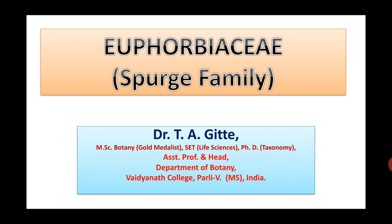Main plants of this family are Croton, Euphorbia, Hevea, Jatropha, Manihot, Ricinus, etc. The family comprises about 300 genera and 7500 species which are cosmopolitan in distribution, meaning they are found all over the world.